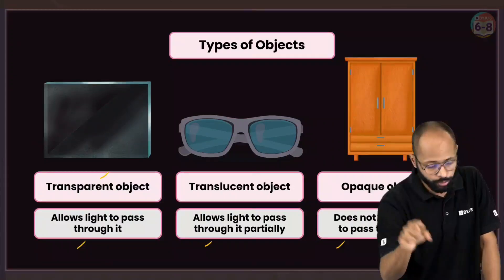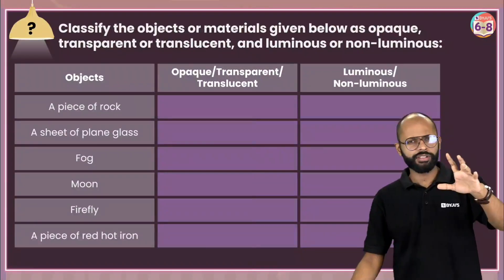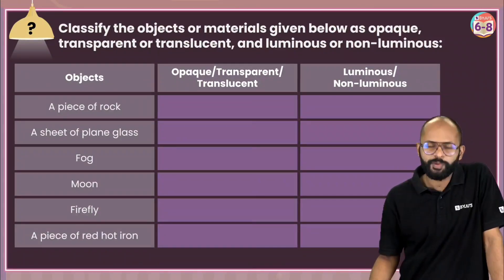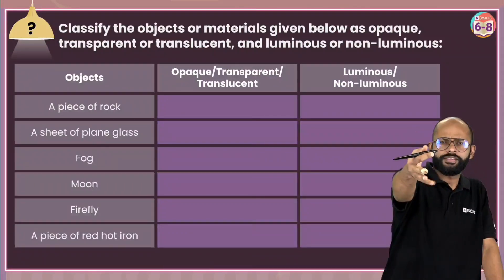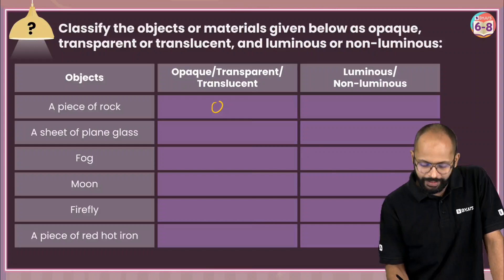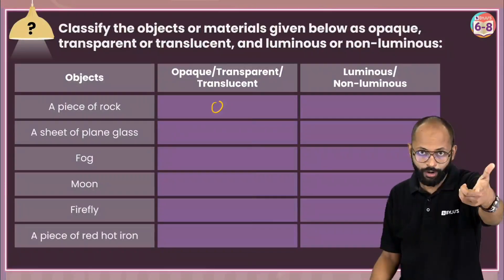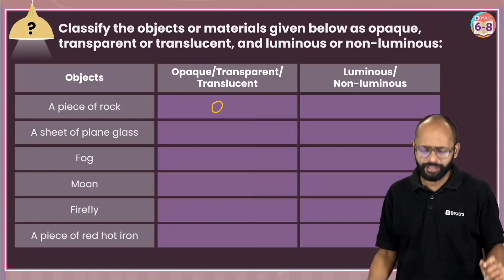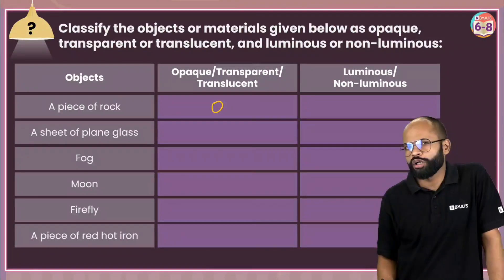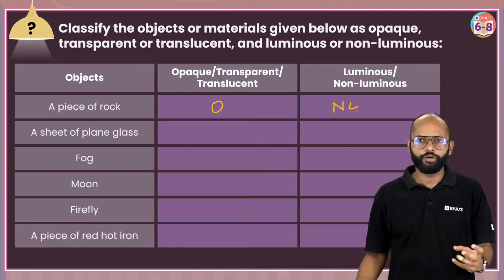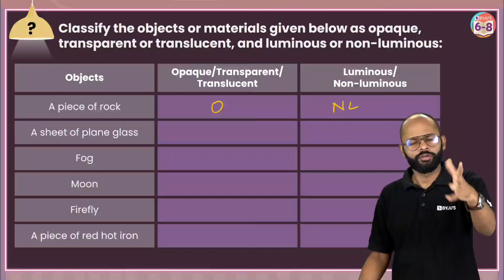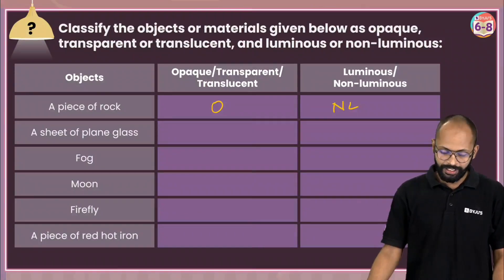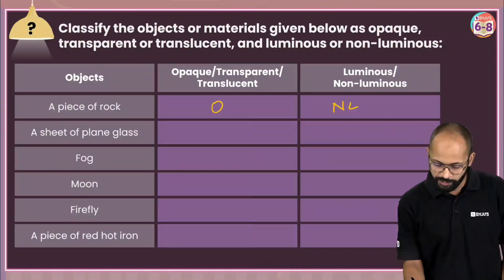Let's have some practice questions. A piece of rock — is it opaque, transparent, or translucent? Obviously opaque — you cannot see through a rock. Is it luminous or non-luminous? Non-luminous. A sheet of plain glass — is it transparent? Yes, transparent. Is it luminous or non-luminous? Non-luminous.